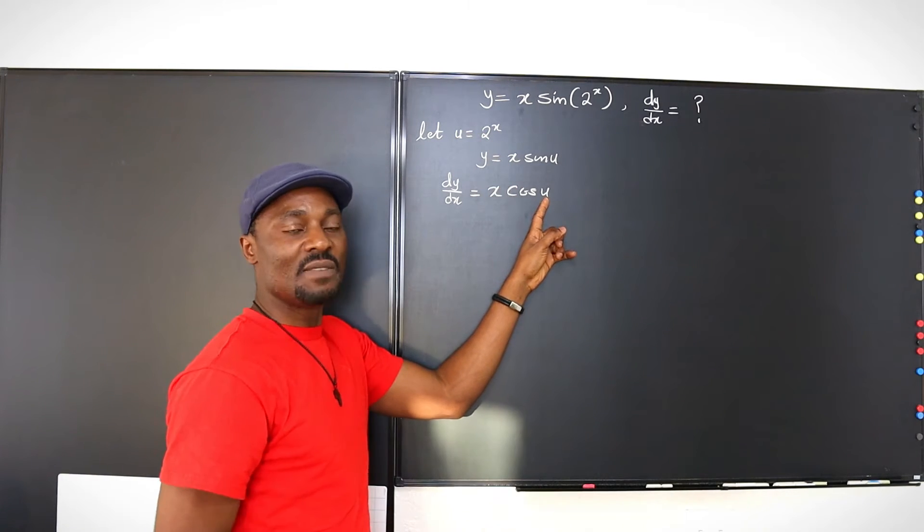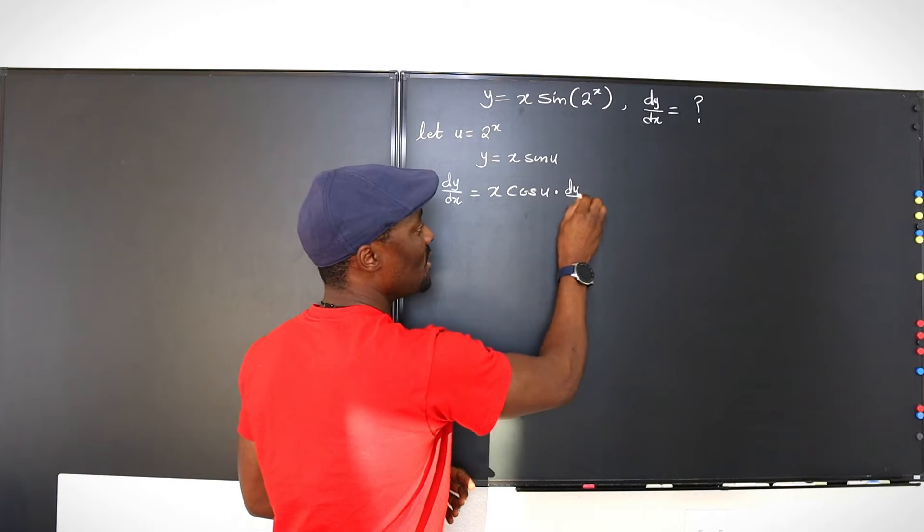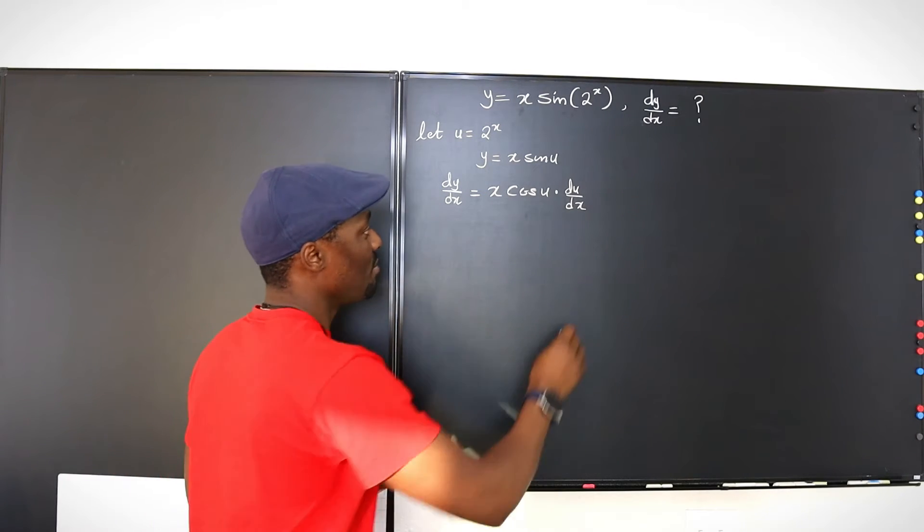But u is a function of x. We know that. Okay, so we can't just leave it. We have to multiply using the chain rule, we have to multiply by du dx. We don't know what du dx is yet and that's what we're going to figure out later. Okay, plus,